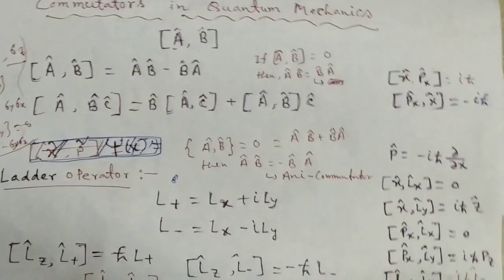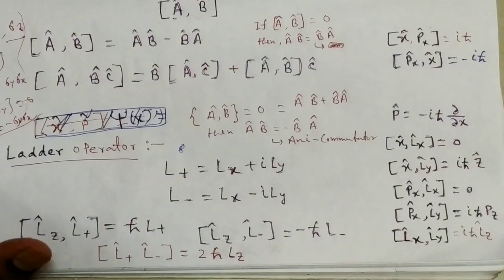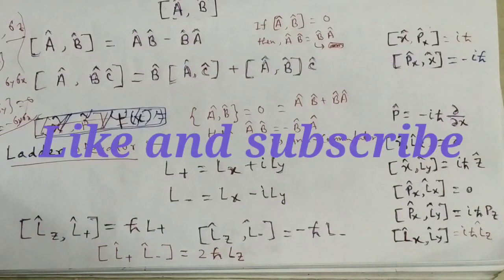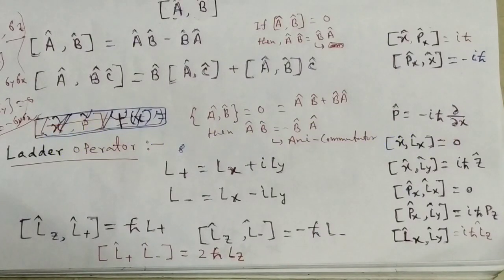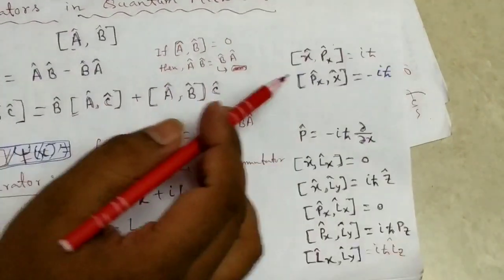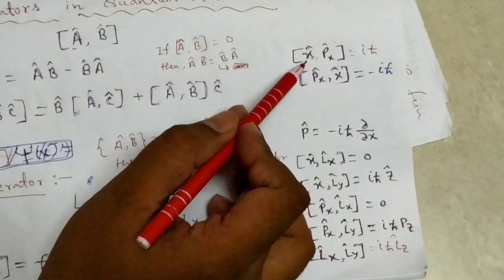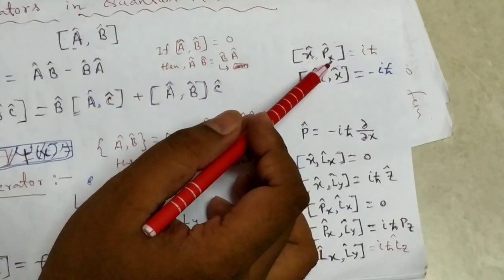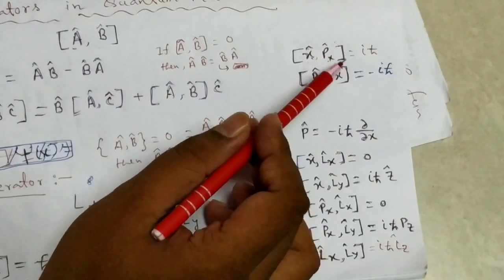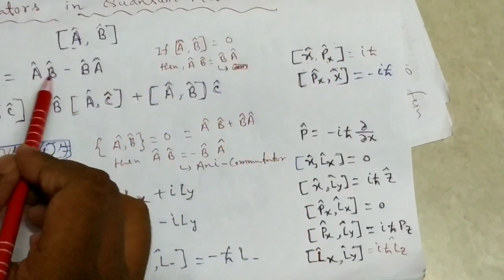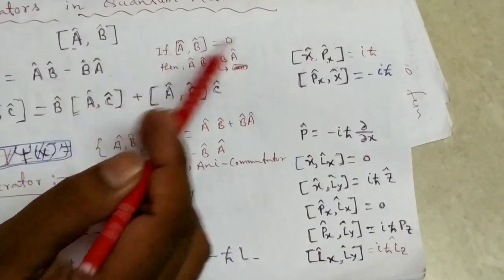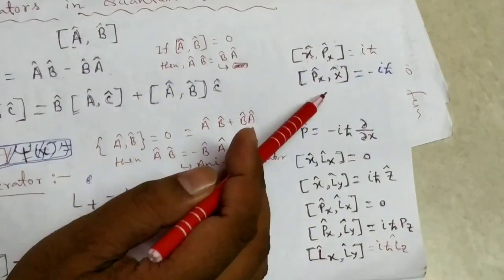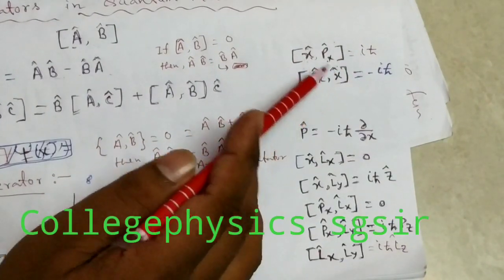Now we discuss some commutator problems. In the previous lecture I discussed operators like linear operators, momentum operators, and angular momentum operators. Suppose we operate [x, p_x]; x is the position operator and p_x is the momentum operator. Using the commutator relation, we get [x, p_x] = x*p_x minus p_x*x = i*h_bar. And [p_x, x] = minus i*h_bar.